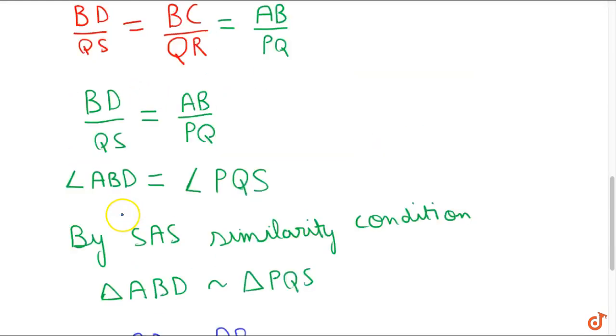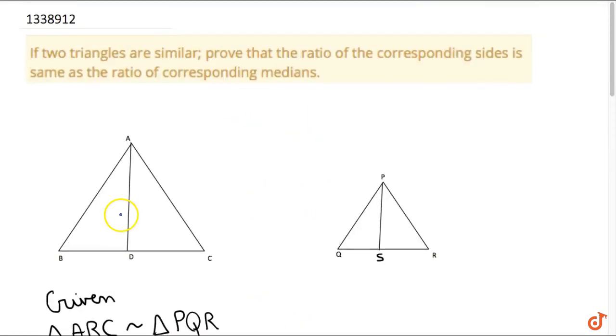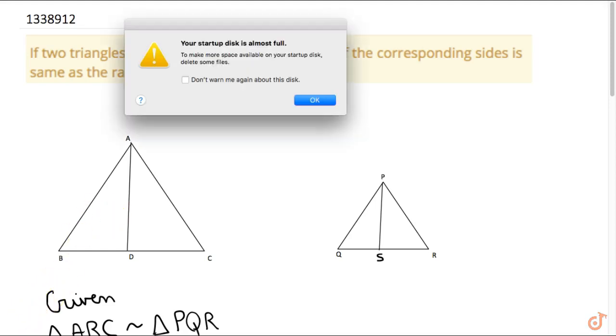In the next video, we will show that if two triangles are similar then the ratio of corresponding sides is same as the ratio of corresponding angle bisectors. Thank you.